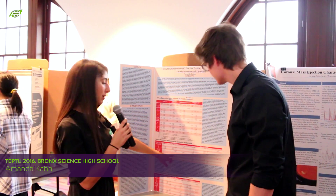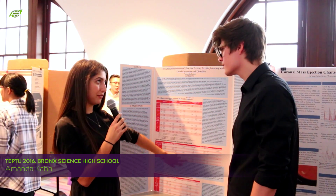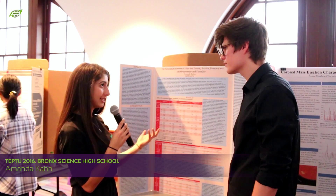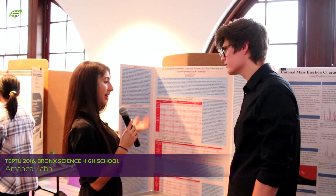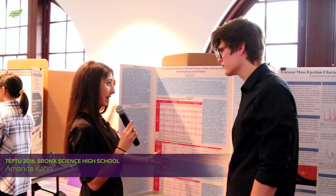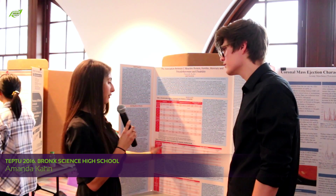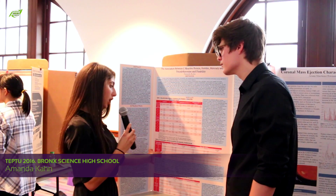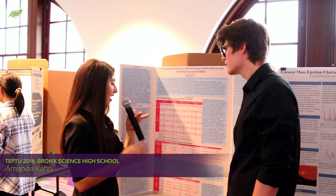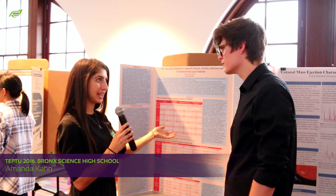I found that there was a ferritin-triiodothyronine association amongst the younger population. My ferritin dataset was entirely female, and that's interesting because females are still going through the menstrual cycle when they're younger, so they're losing more blood — that's probably the reasoning for the association with only a younger population and not an older population, which has implications for my study.